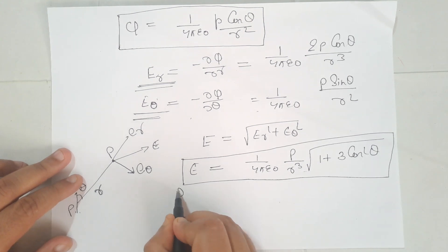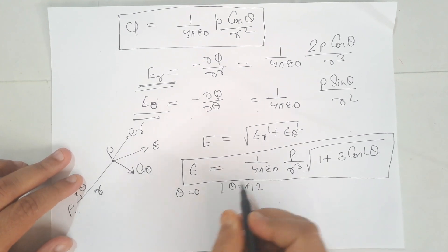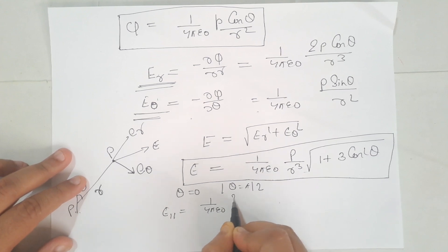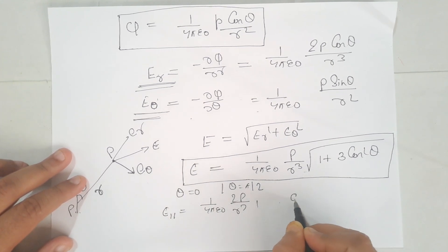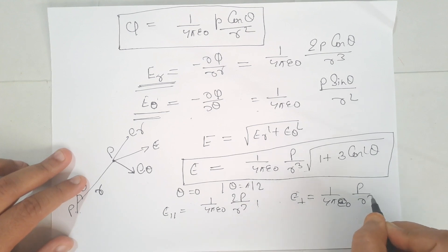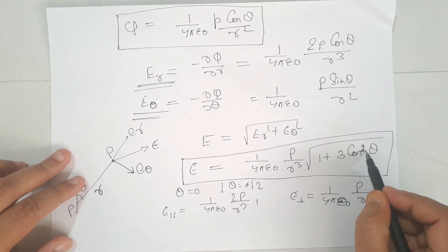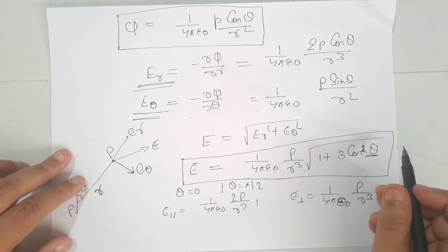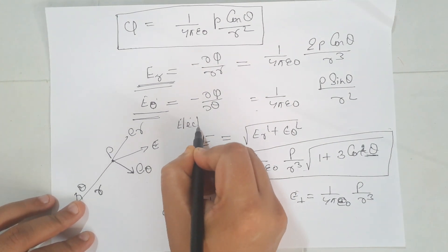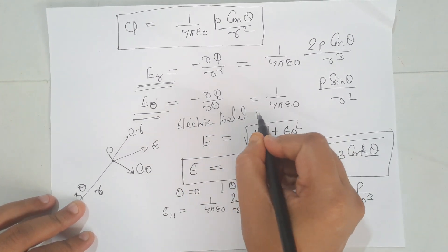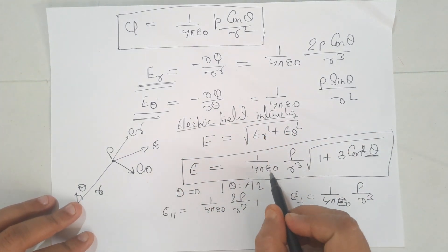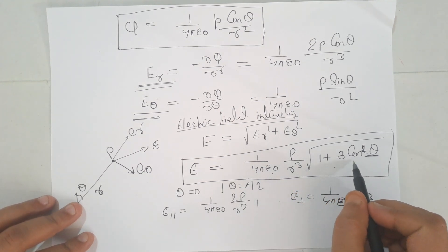If theta equals 0 and theta equals pi over 2, then the parallel dipole field is 1 over 4 pi epsilon-naught times P over R-cubed. The electric field intensity of a dipole is: E equals 1 over 4 pi epsilon-naught times P over R-cubed times the square root of (1 plus 3 cos-squared theta).